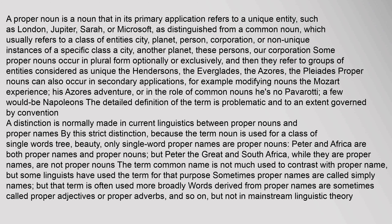A proper noun is a noun that in its primary application refers to a unique entity, such as London, Jupiter, Sarah, or Microsoft, as distinguished from a common noun, which usually refers to a class of entities — city, planet, person, corporation — or non-unique instances of a specific class: a city, another planet, these persons, or corporation.